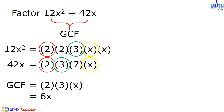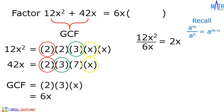Let us factor out the GCF, which is equal to 6x, and let us determine the other factor by dividing the GCF into each term in 12x squared plus 42x. 12x squared divided by 6x is equal to 2x, and 42x divided by 6x equals 7. And the other factor is 2x plus 7. It means that 12x squared plus 42x is equal to 6x times the quantity 2x plus 7.